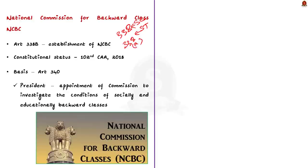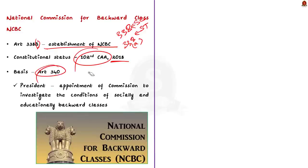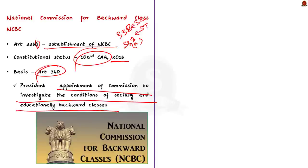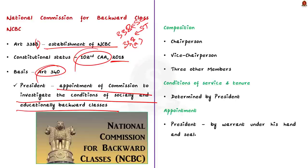NCBC was given constitutional status by the 102nd Constitutional Amendment Act 2018, which inserted Article 338B. The basis for this is Article 340, which says the president may appoint a commission to investigate the conditions of socially and educationally backward classes within India. As per Article 338B, the commission shall consist of a chairperson, vice chairperson and three other members — all appointed by the president by warrant under his hand and seal. The conditions of service and tenure of office are also determined by the president.